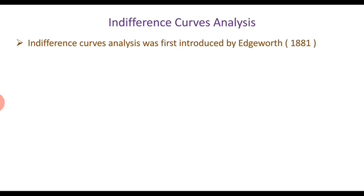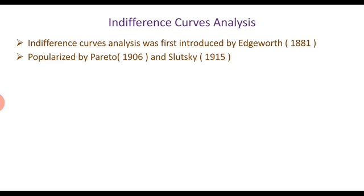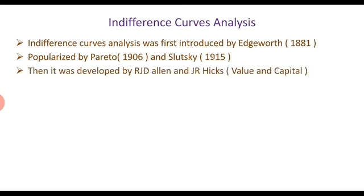Indifference curves analysis was first introduced by Edgeworth in 1881. It was popularized by Pareto and Slutsky, and then further developed by R.J.D. Allen and J.R. Hicks. J.R. Hicks' famous book is Value and Capital.